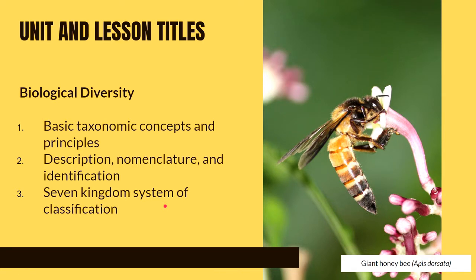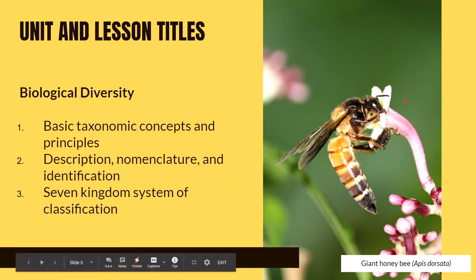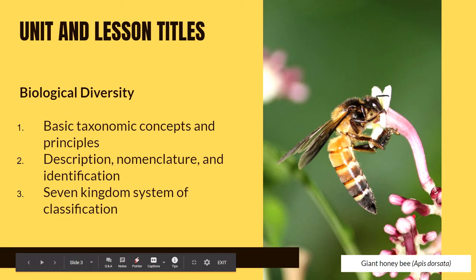All throughout these videos, you will see images of organisms, and you can also see at the bottom their common name followed by their scientific name. For example, this is the giant honeybee, and its scientific name is Apis dorsata.